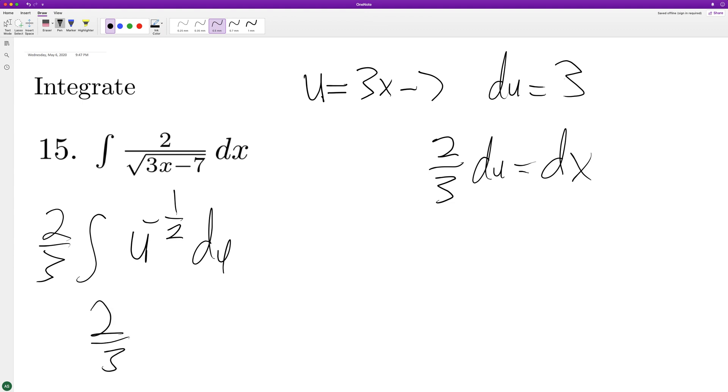When we integrate, we get U raised to the 1 half divided by 1 half. So we get 4 thirds U raised to the 1 half.